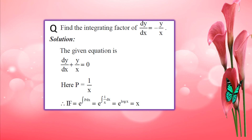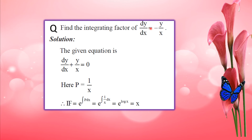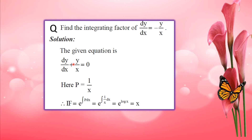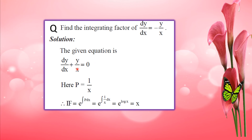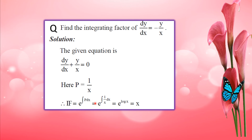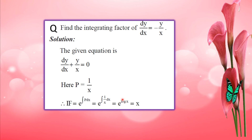Another linear ODE: dy by dx plus y by x equals 0. Comparing with dy by dx plus Py equals Q, we have P equal to 1 by x. The integrating factor is e raised to integral of 1 by x dx, which equals e raised to log x, giving x.